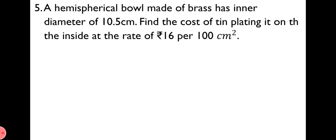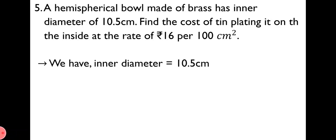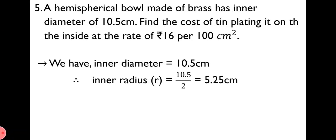Next, question number 5. A hemispherical bowl made of brass has an inner diameter of 10.5 cm. Find the cost of tin plating it on the inside at a rate of ₹16 per 100 cm². Here, the inner diameter is given as 10.5 cm. First, we find the radius from the given diameter. For solution, inner diameter = 10.5 cm. Therefore, inner radius r = 10.5/2 = 5.25 cm, since radius is half of diameter.